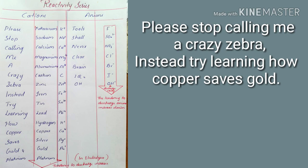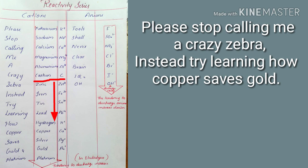So you have two C's here — one for 'crazy' and one for 'copper.' But since copper is already written there, the 'crazy' stands for carbon. Any metals below carbon in the series can be reduced using carbon, and those below hydrogen can be reduced using hydrogen.